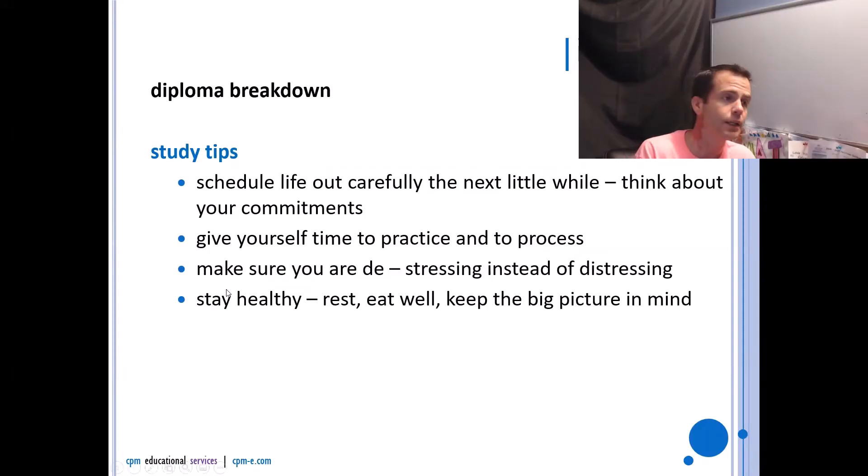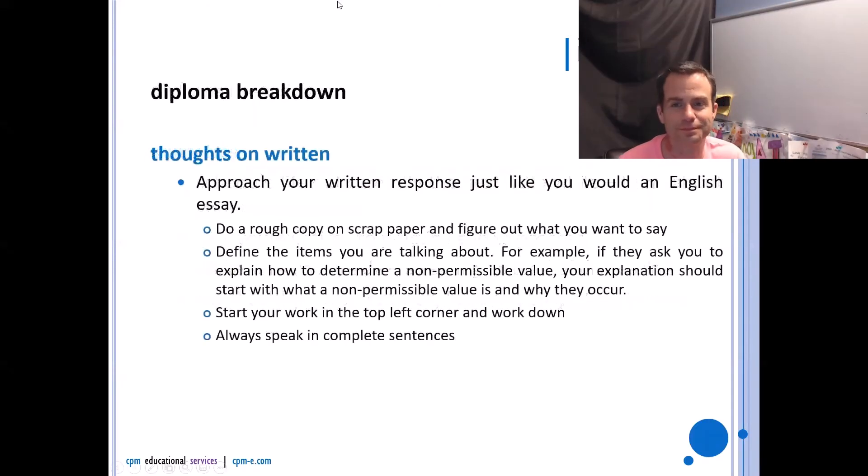Do something. Take a break. Take some sort of a mental hiatus. Get outside. Go for a walk. Do something that will just recharge and reboot your brain for a little bit. Stay healthy. Rest. Eat well. Keep the big picture in mind. Whether you make a 94 on this exam or you make a 95 on this exam, when you're lying on your deathbed, you're not really going to care between that 94 and 95. So just keep the big picture in mind.